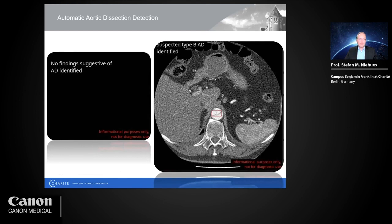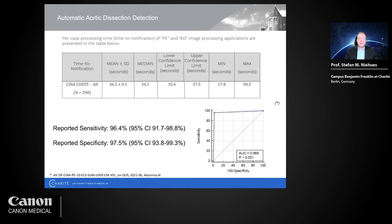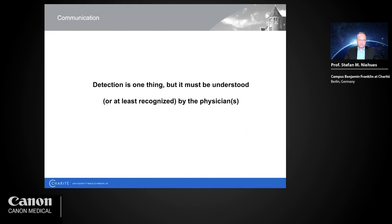For aortic dissection, thumbnails indicate either no findings or positive findings with key images showing a red line marking the dissection — including the type, such as type B aortic dissection. For larger or multiple dissections, multiple key images show the full extent. Processing time in median is just over 34 seconds, with sensitivity of 96% and specificity of 97%, so you can really rely on the results from the automation platform.